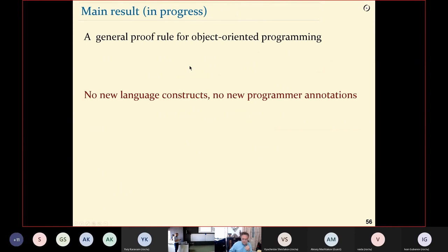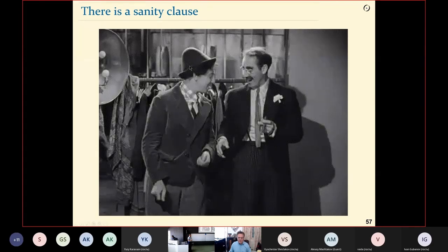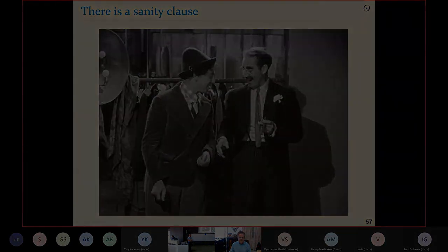So what this has shown, what this work is yielding, is a general proof rule for object-oriented programming which as far as I know didn't really exist. And the only versions that existed imposed a large amount of annotation on the programmer. So in this case, there are no new language constructs, no new programmer annotations. Of course, in some cases you might have to tweak your code a little bit, like in the marry case, reordering the instructions. But this is true of verification in general. You usually have to adapt it a little bit in order to make a proof. And so in this respect, I think this work has made at least a valiant attempt to justify Chico Marx's comment that yes indeed, there is a sanity clause.